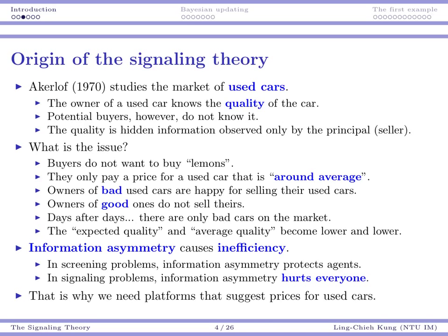Professor Akerlof from UC Berkeley once studied the market for used cars. For used cars, it's typically the case that the owner — the seller — knows the quality of that car, but potential buyers do not. You see a used car posted on a website, you see those basic attributes, but you don't really know how the previous owner treated the car and how it was maintained. So the quality is a piece of hidden information which can be observed only by the principal — in this case the seller — because the principal is going to offer a price for that particular used car.